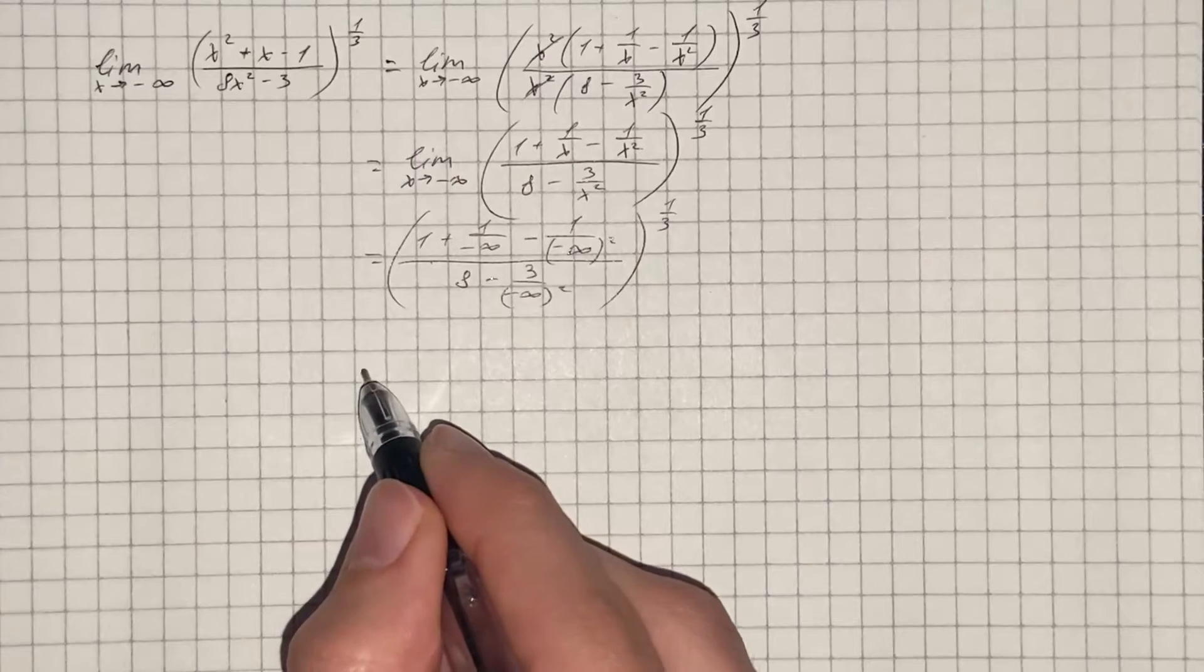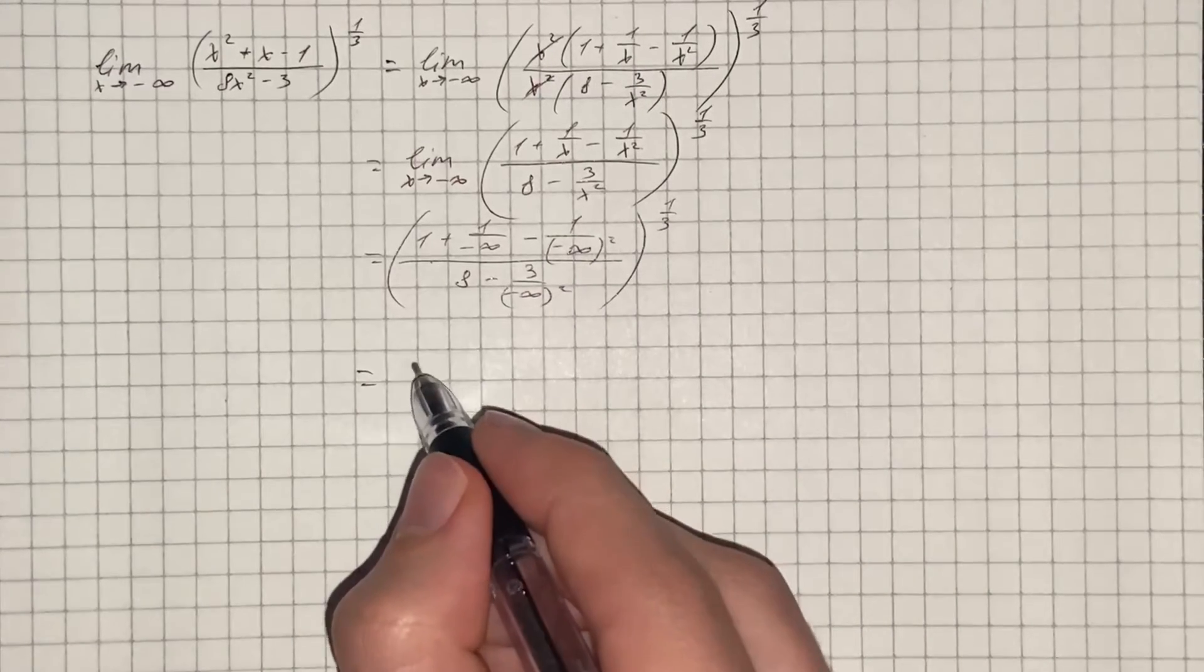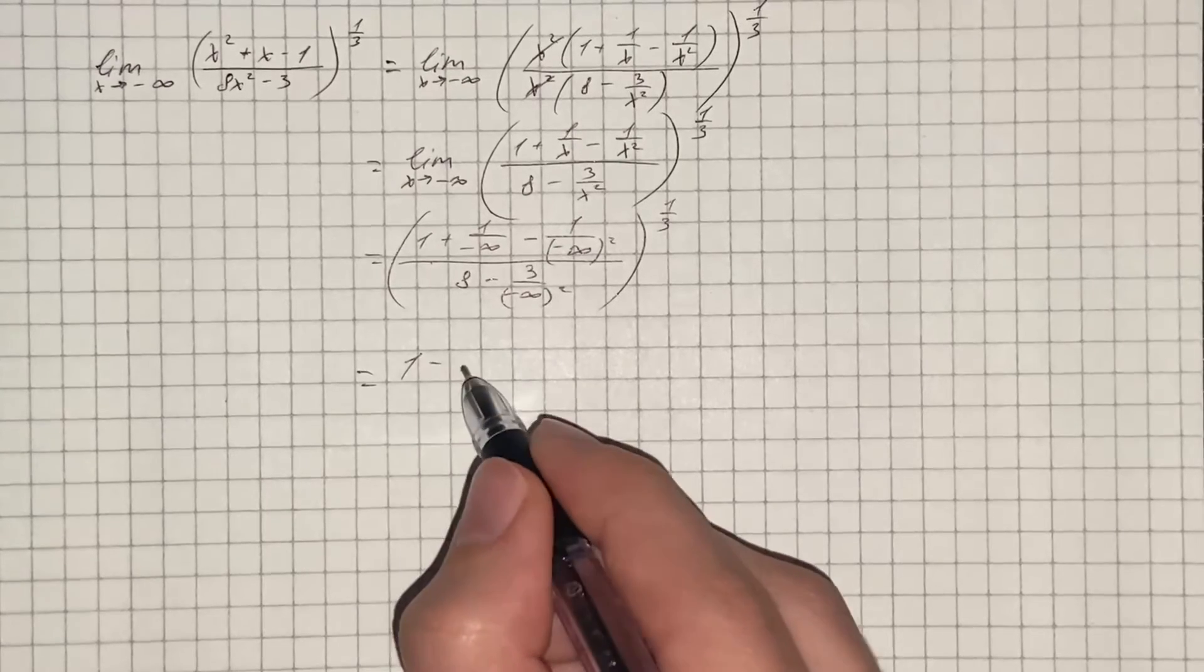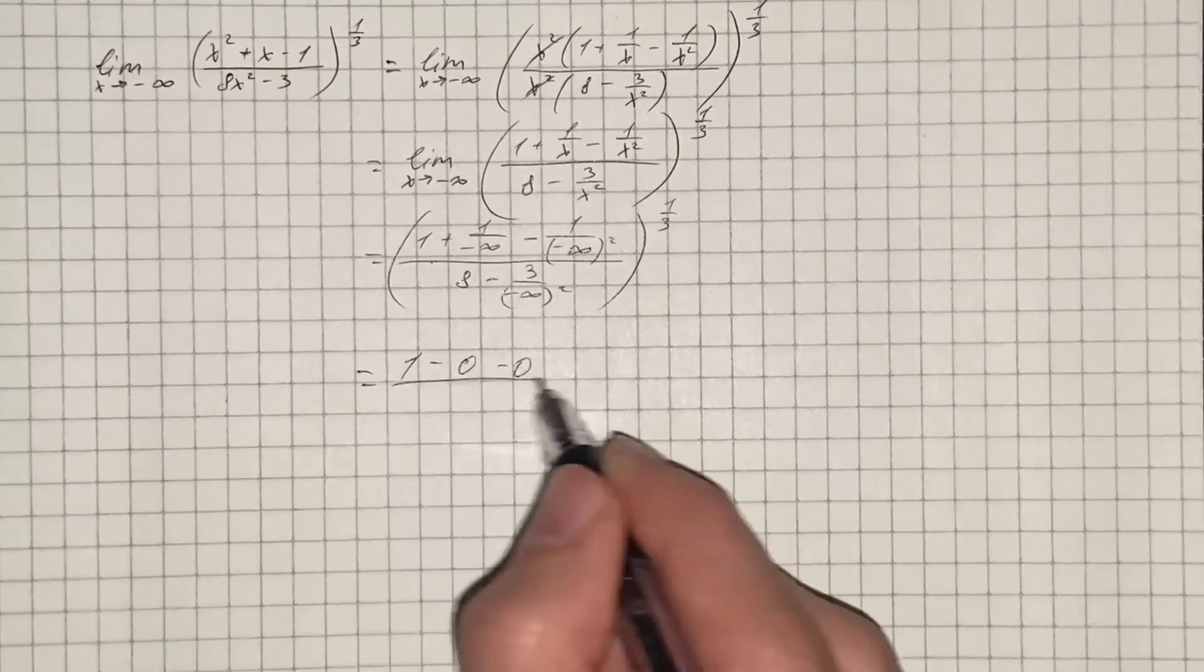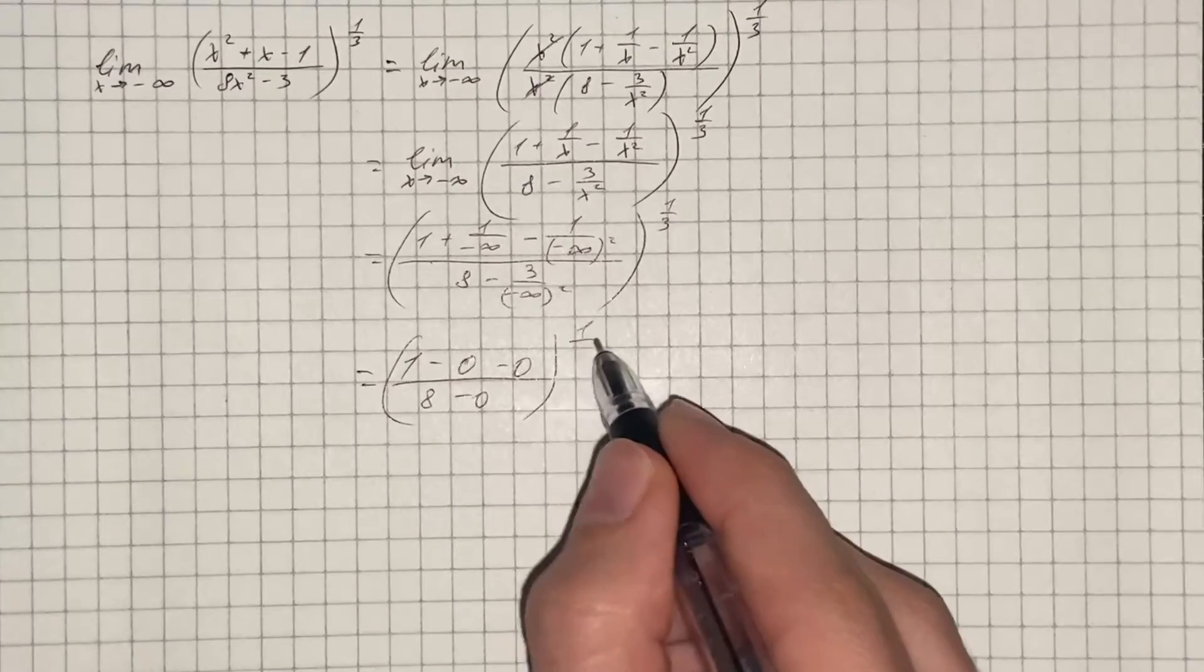We know that when we divide 1 by infinity we get 0, so it's going to be (1 minus 0 minus 0) over (8 minus 0) to the power of 1/3.